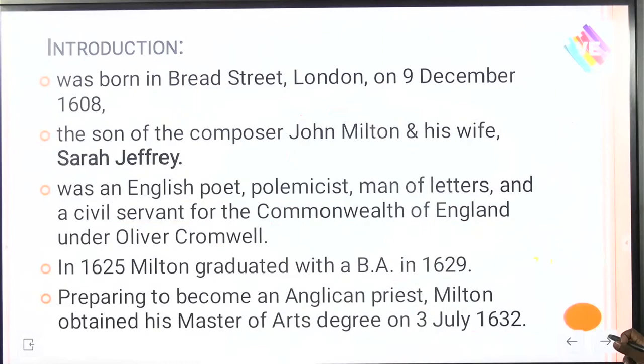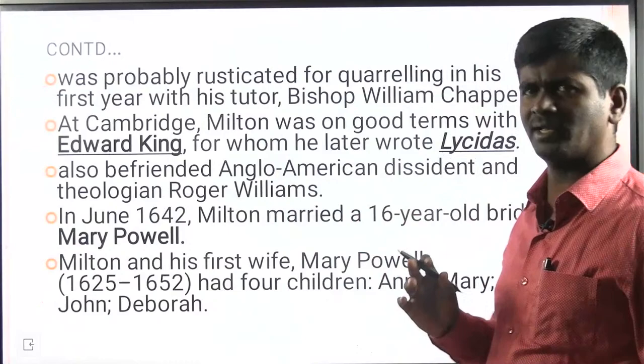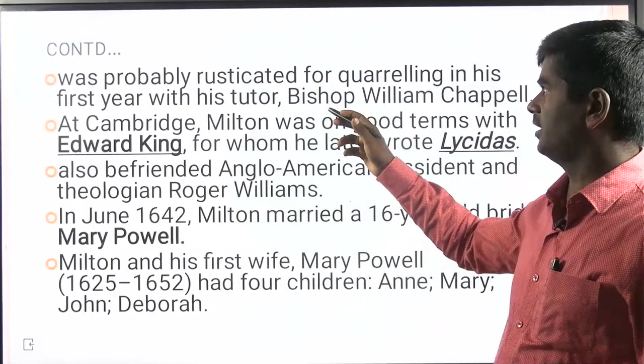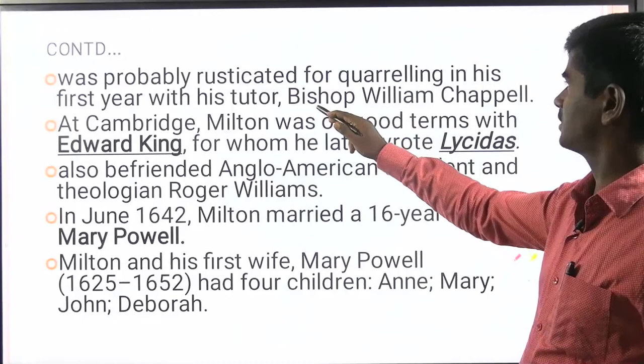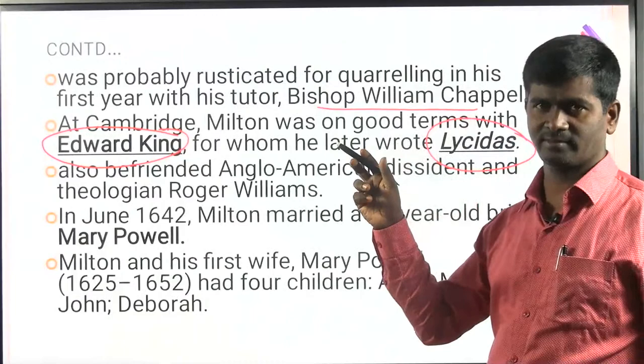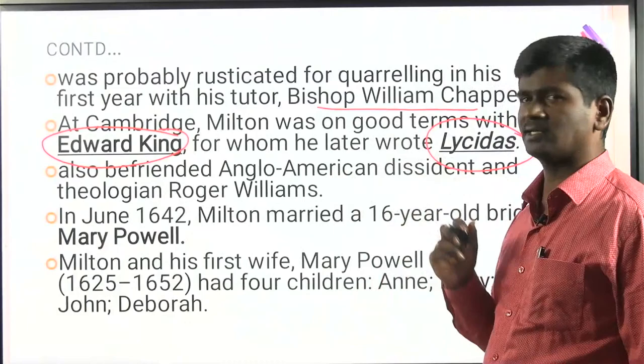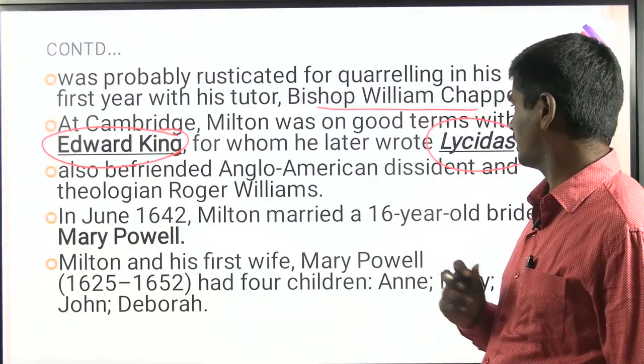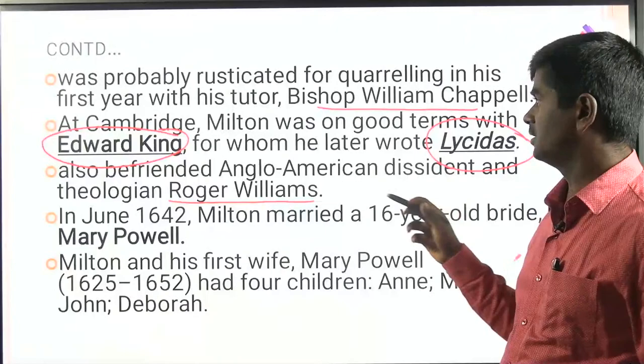Milton was rusticated from the university for quarrelling — specifically, he had a quarrel with Bishop William Chappell. At Cambridge, Milton was on good terms with Edward King, his close friend, whom he later memorialized in the poem Lycidas on his death. Lycidas is a popular pastoral elegy written by John Milton. He also befriended Anglo-American dissident and theologian Roger Williams, who spoke about the importance of religion at the time.